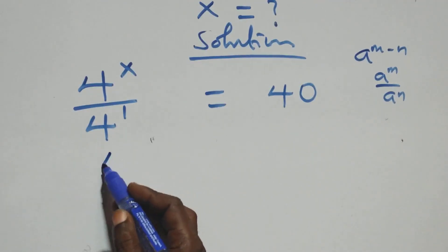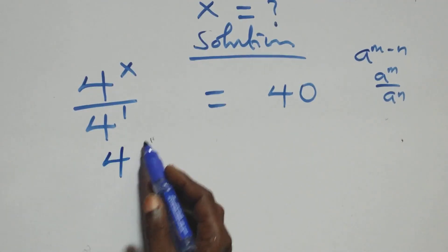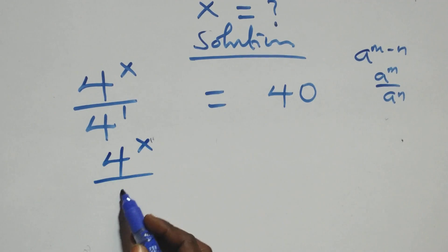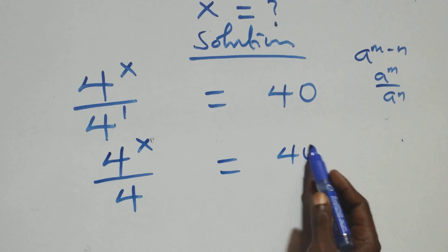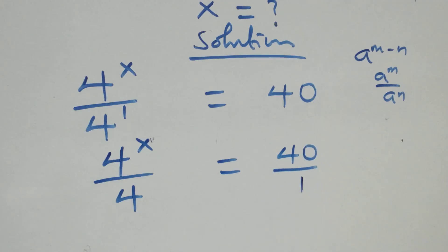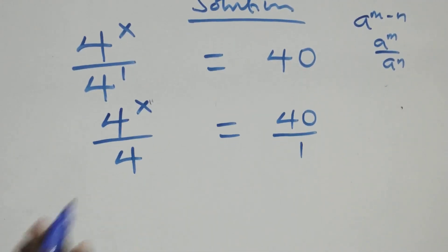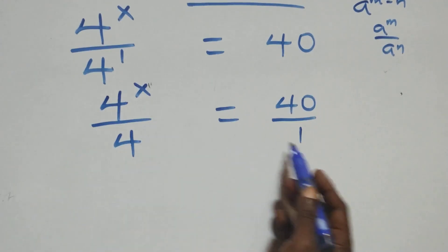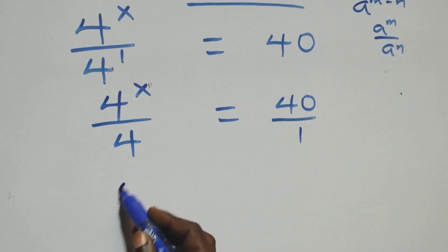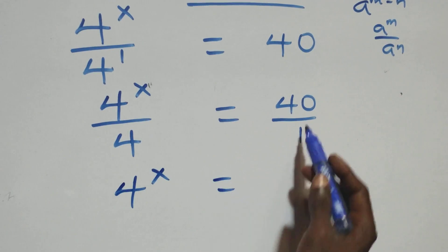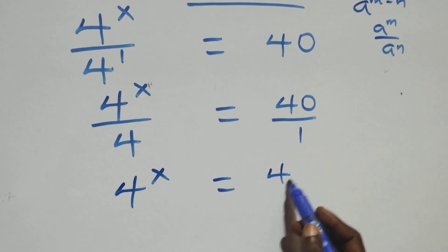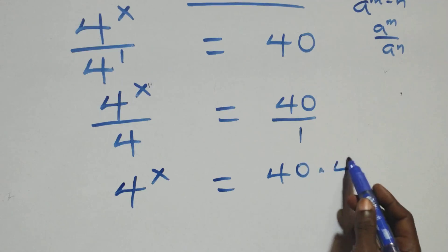The next step: this is the same thing as 4 raised to power x over 4 raised to power 1 — that's 4 — equals to 40 over 1. We then cross multiply: 4 raised to power x times 1, same thing as 4 raised to power x, equals 40 times 4.